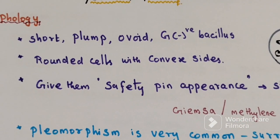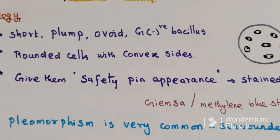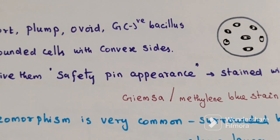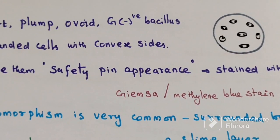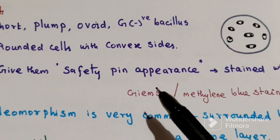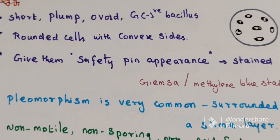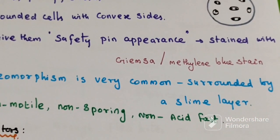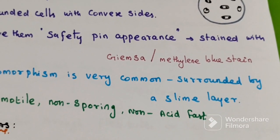They are rounded cells with convex sides which give them a safety pin appearance. They are stained with Giemsa or methylene blue. This is the characteristic safety pin appearance in Yersinia pestis. Pleomorphism is very common in them and it is surrounded by a slime layer.